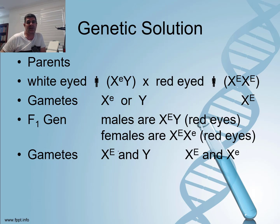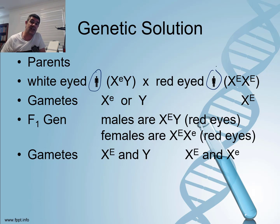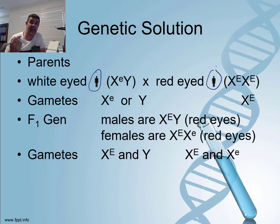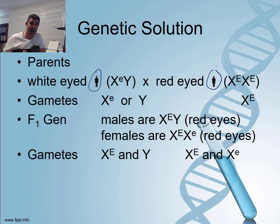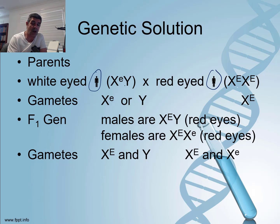We can represent these crosses, but we need to be mindful of the genders involved. Rather than just using letters as in a normal monohybrid cross, we now link those letters to the X and Y chromosomes. This tells us not just the probability of a trait being inherited, but also the gender ratios of these inheritance patterns.